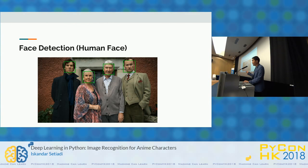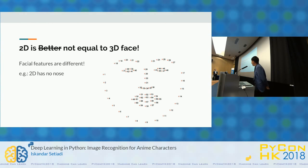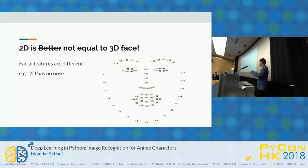But the problem is, using the same model, it doesn't work with anime character faces — it detects only one face in the middle and nothing else. The conclusion is: 2D is not equal to 3D face. In 2D anime characters there's no nose, and the eyes are big, so they have different features. A human face has around 67 points of facial features, and the machine learning model learns the distances between those points to differentiate between faces.